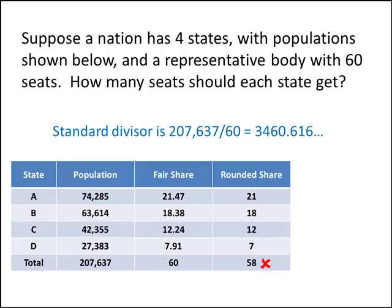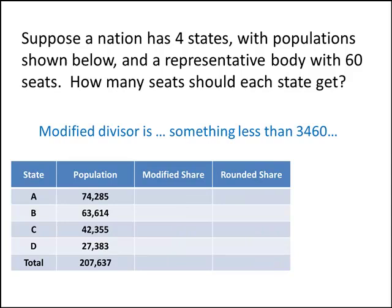We got those fair shares by dividing the populations of each state by the standard divisor, 3460. So if we divided by a smaller number, we would get bigger answers. Therefore, our modified divisor should be something less than 3460.